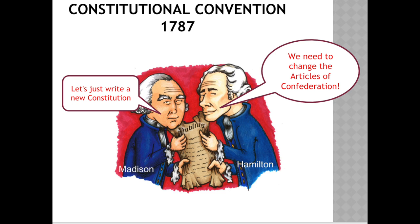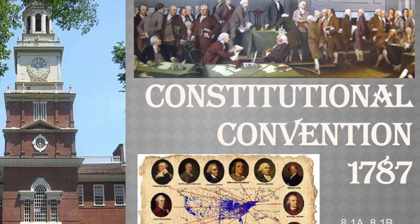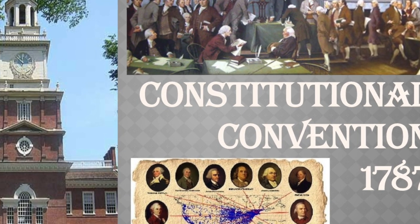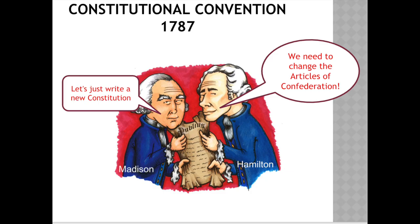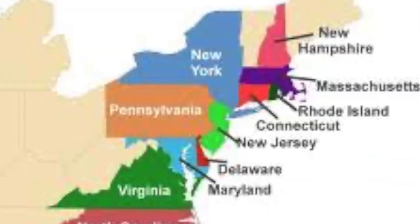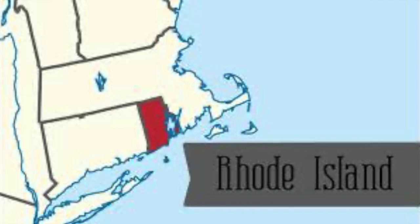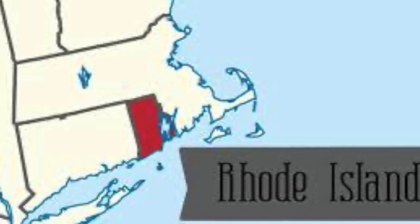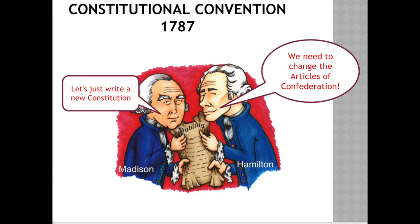We have people such as James Madison and Alexander Hamilton who say, let's have a meeting — let's call a convention. Hamilton says we need to change the Articles of Confederation. But it's there at the Constitutional Convention that they realize they can't change it because they needed 13 out of 13 votes and Rhode Island never showed up. So Madison says, we're just going to have to write a whole new constitution — let's scrap the Articles and start anew.